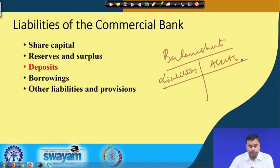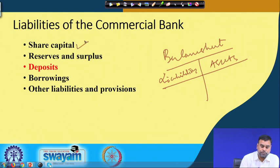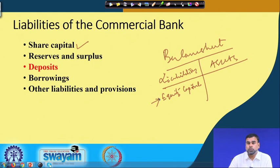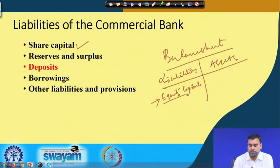What are those liabilities? The first liability for any kind of organization is share capital — here we are referring to equity capital. Why is equity capital a liability? Because the money invested by different equity shareholders within that organization means they are the owners of the company, and the company or bank has to pay dividends and share the profits raised from that investment among the individual shareholders participating in those operations. That is why equity capital is considered a liability for the organization.